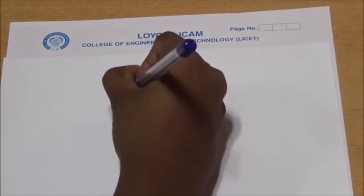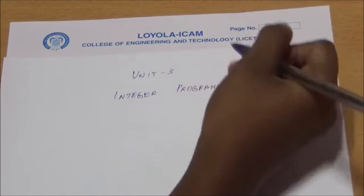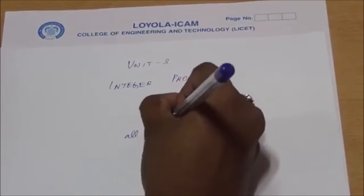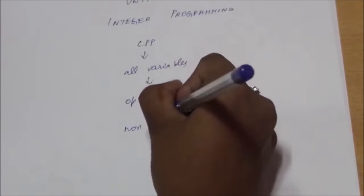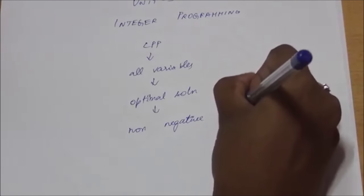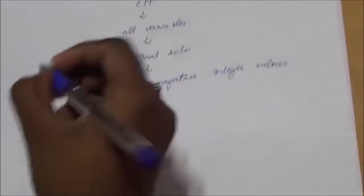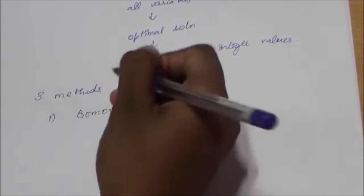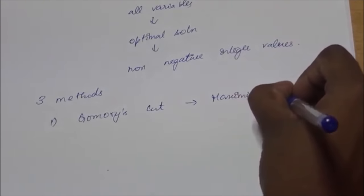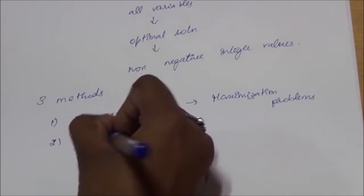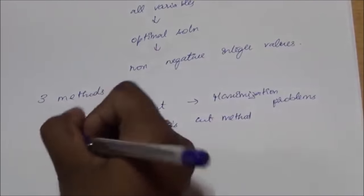Unit 3: Integer Programming. A linear programming problem in which all the variables whose optimal solution must be non-negative integer values is called an integer programming problem. We can solve this integer programming problem by three methods: first, Gomory's cut method, which is applicable only for maximization problems; second, the Mixed Gomory's cut method; and third, the branch and bound technique.